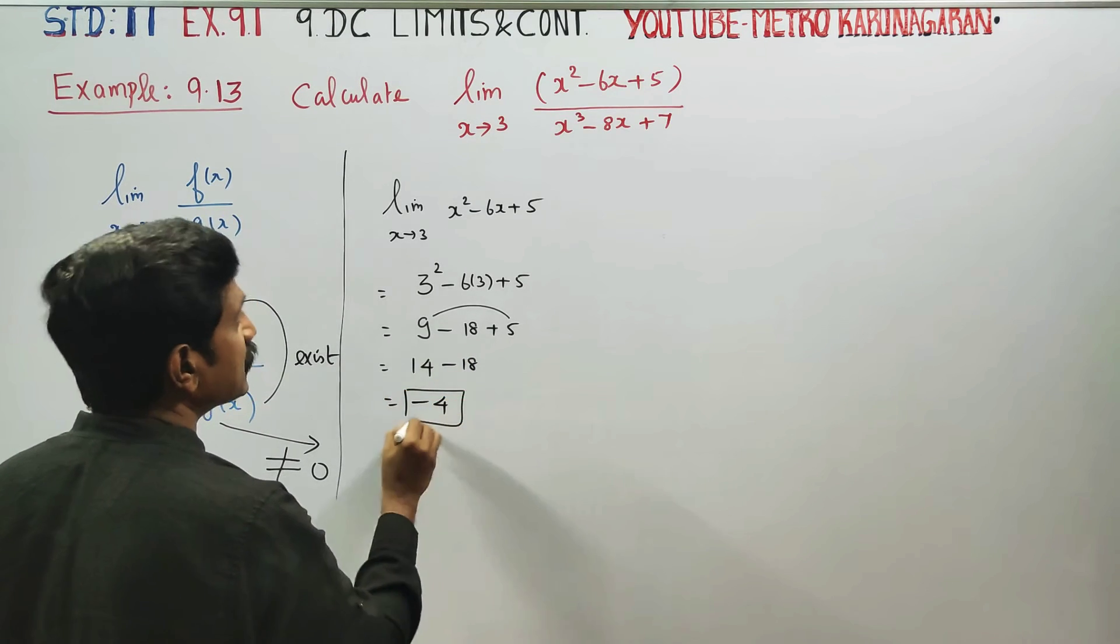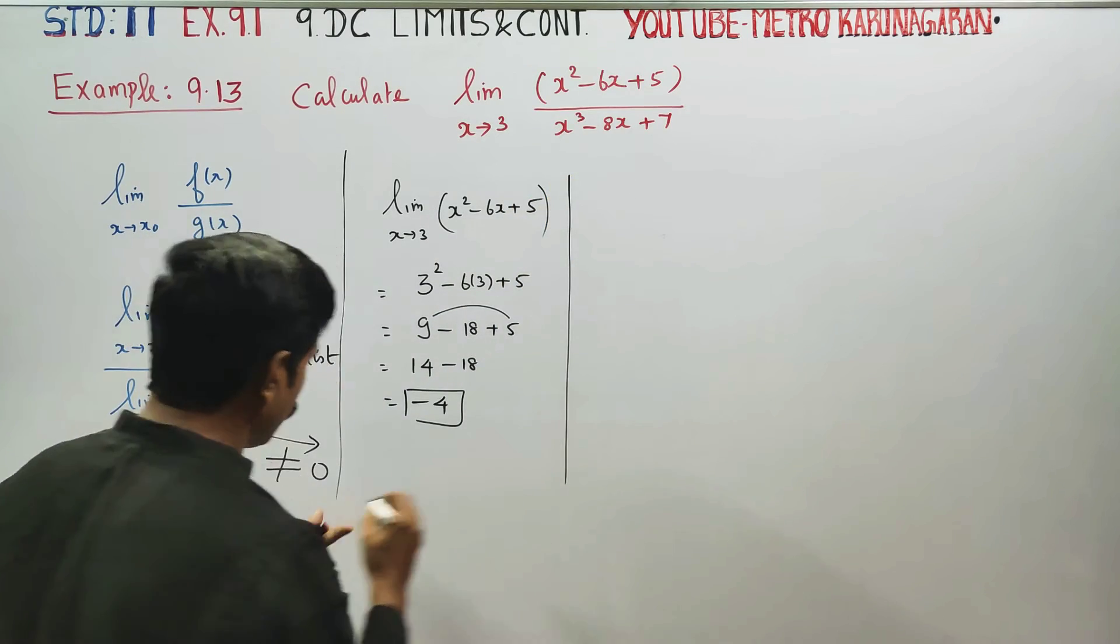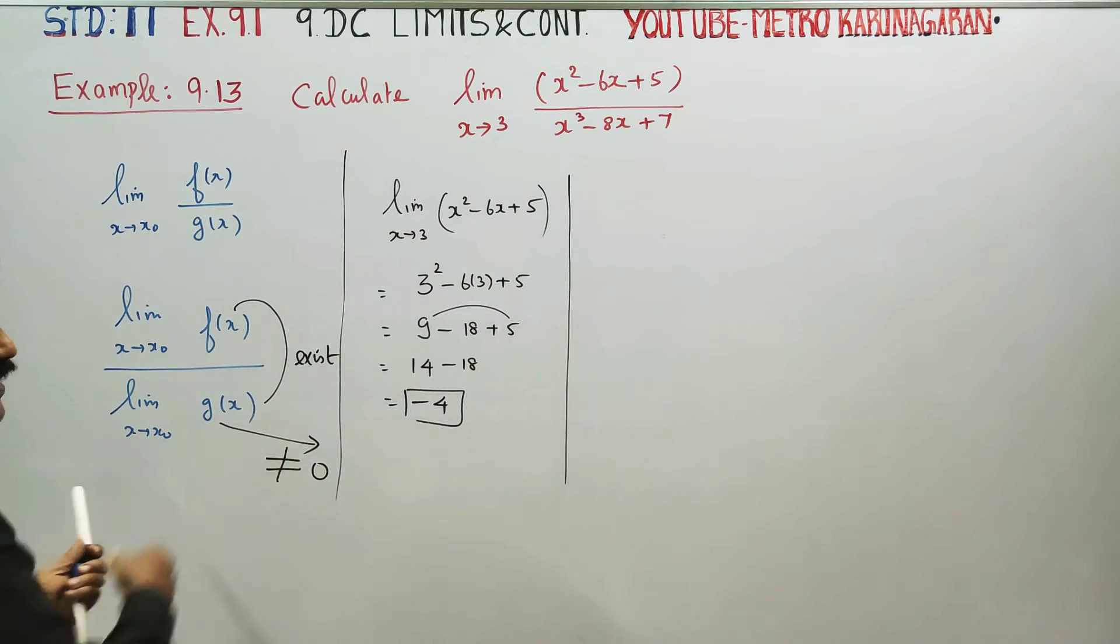Answer is -4. The limit exists. Now the numerator is done. Next is the denominator. That is zero—no, the limit exists.